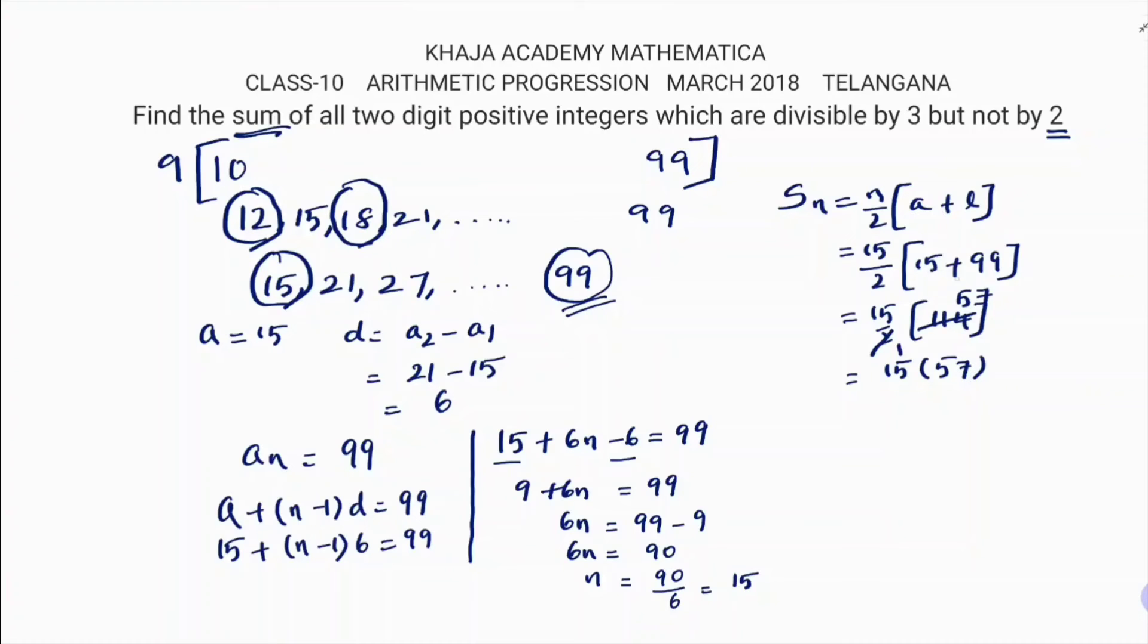So first I added 15 plus 99, which gives you 114. 114 when I cancel with 2, I got 57. So 15 times 57 will give you 855. If you multiply 57 with 15, you will get 855.